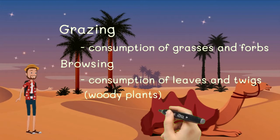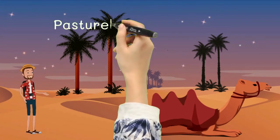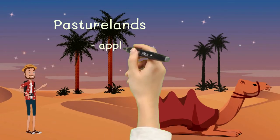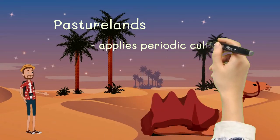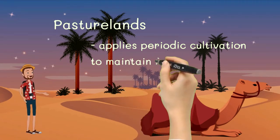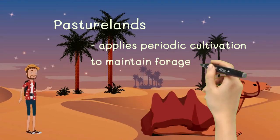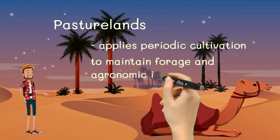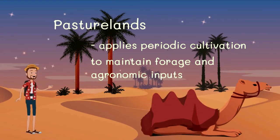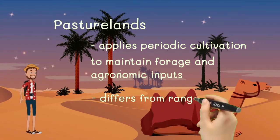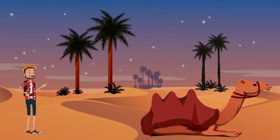For pasture lands, they can be distinguished from rangelands since they apply periodic cultivation to maintain introduced forage species, and agronomic inputs such as irrigation and fertilization are applied manually.